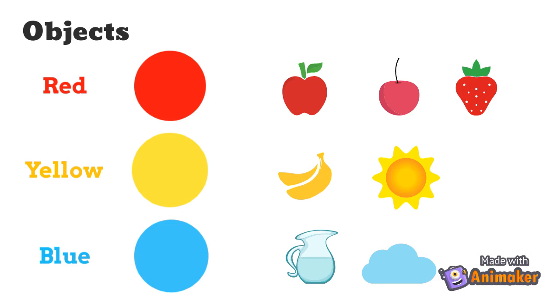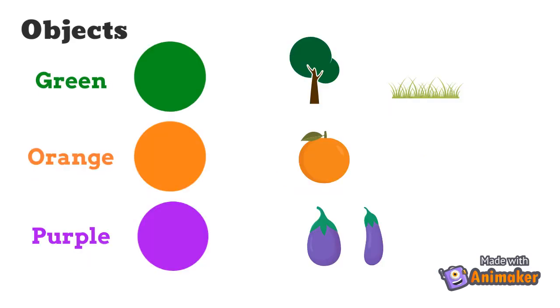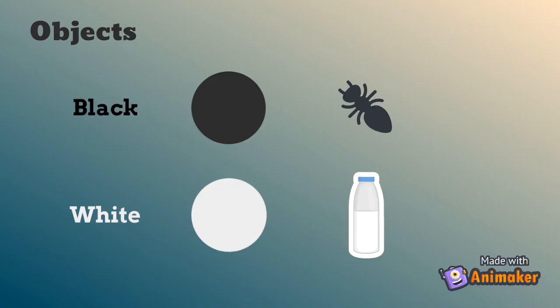Apple, cherry, and strawberry are of red color. Banana and sun are of yellow color. Water and clouds are of blue color. Trees and grass are of green color. Orange fruit is of orange color. Brinjal or eggplant are of purple color. Ants are of black color. Milk is of white color.